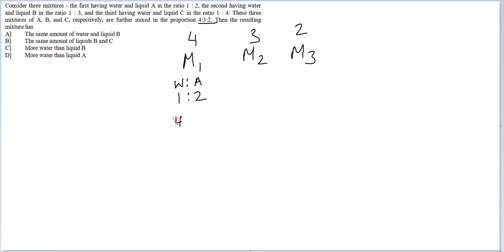Now mixture 1 has water and A in the ratio 1 is to 2, so water here would be 4 by 3 and here it would be 8 by 3. In mixture 2, water is to B is in the ratio 1 is to 3, so water would be 3 by 4 and B would be 9 by 4.